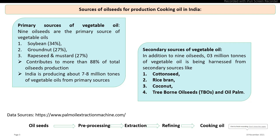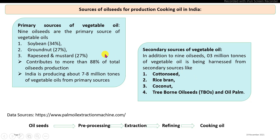The sources of oil seeds for the production of vegetable cooking oil in India are categorized into two main groups. The first is the primary source, which contributes about 88% of total production. The remaining approximately 12% is contributed by secondary sources. Primary sources include soybean, groundnut, rapeseed, and mustard. Secondary sources include cottonseed, rice, coconut, and others.